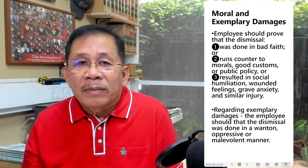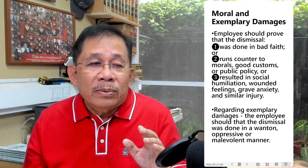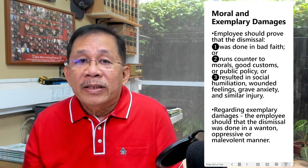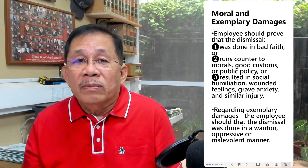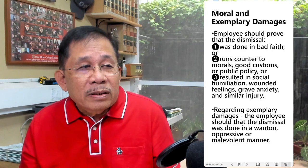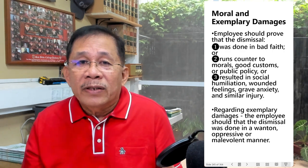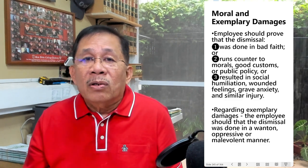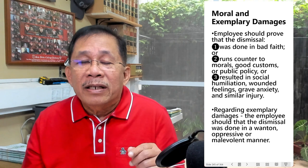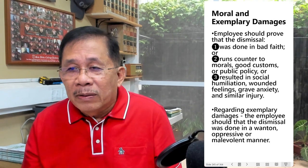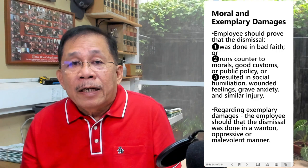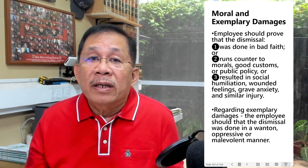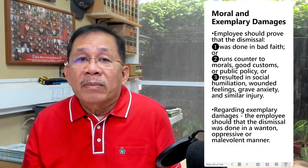Regarding moral and exemplary damages, it is not enough to prove that the dismissal was illegal. You have to prove that the dismissal was done in bad faith, or is contrary to morals, good customs, or public policy, or that it resulted in wounded feelings, grave anxiety, and similar injury — because here we apply the Civil Code provisions on moral damages. Regarding exemplary damages, the employee should further prove that the dismissal was done in a wanton, oppressive, or malevolent manner.